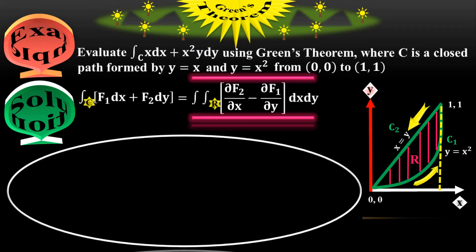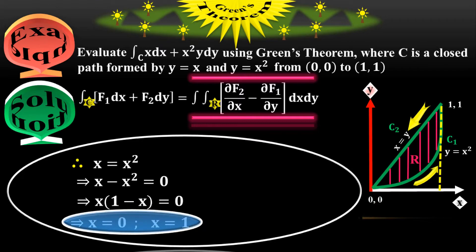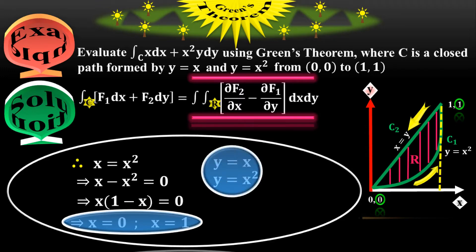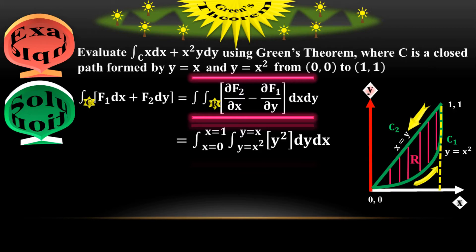Now to find the limits, from the diagram y equals x and y equals x squared, so x equals x squared, giving x minus x squared equals 0. Taking x common, the x-coordinates range from x equals 0 to x equals 1. Along the y-axis, the region ranges from y equals x squared to y equals x. Placing these limits into the double integral gives integration from x equals 0 to 1 and y equals x squared to y equals x.